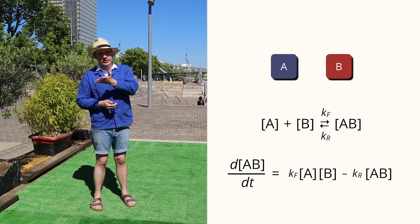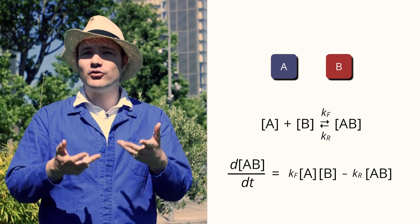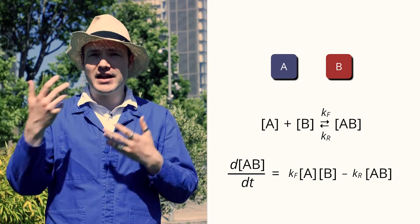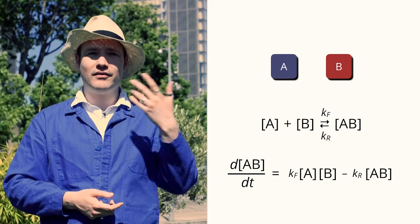The reaction goes forward at some rate, and the reaction goes back, but which direction wins? At the end of the day, are we going to see more of the AB complex or more of the subunits?